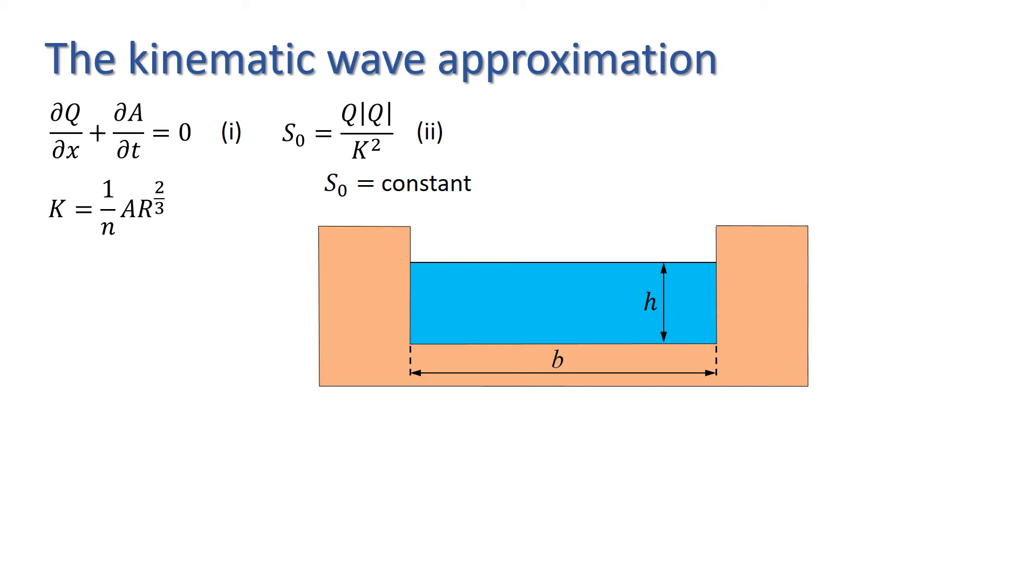First, we note that since the channel has a rectangular cross-section, we have A equals the width b times h, where h is the water depth. The hydraulic radius is given by A over P, where P is the wetted perimeter, which in this case is b plus 2h.